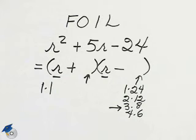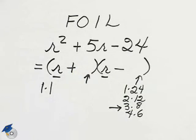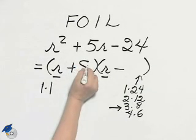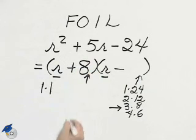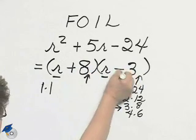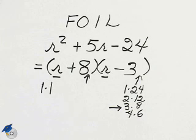I want to have plus 5 when I'm done, so I'm going to let 8 be the positive one and 3 be the negative one. Now, if you foil this, you will see that it is correct.